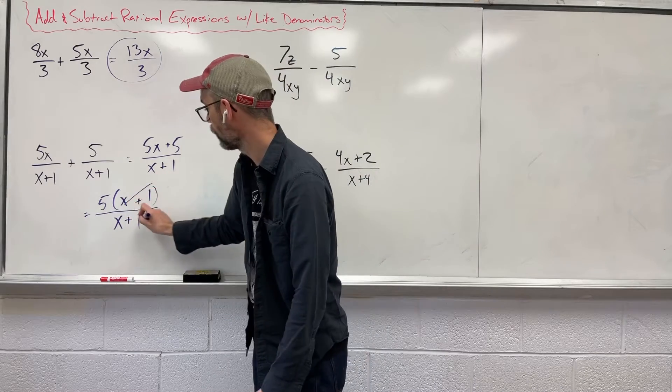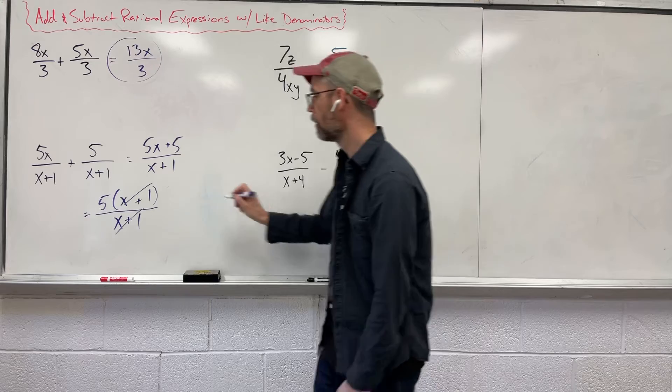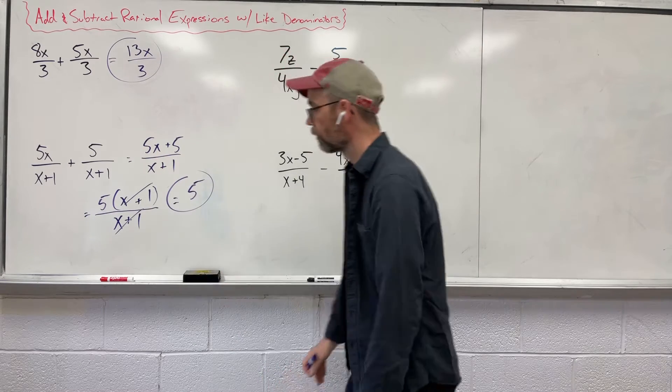Because we then factor out 5 and then x plus 1. And now the x plus 1 and x plus 1, they're the exact same things. So let's just cancel them out, leaving us with just plain old 5.